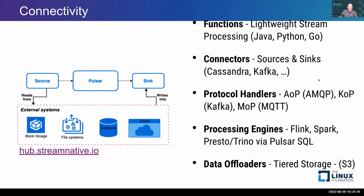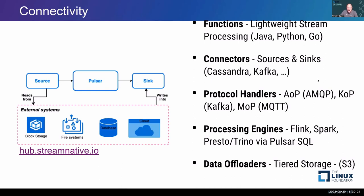Related but not the same, we support functions — lightweight bits of code in Java, Python, or Go that run either in the Pulsar broker or in your own Kubernetes cluster. This is not to replace Spark or Flink. It's for doing little bits of stuff: converting one type to another, changing fields, doing enrichment or a lookup, breaking up a big blob of JSON into smaller bits and routing to different topics, or running sentiment analysis or an existing ML library.